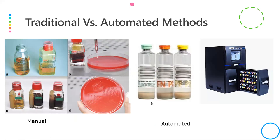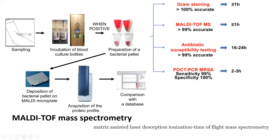Advances beyond classical culture methods include automated systems that detect carbon dioxide produced by bacterial growth using colorimetric or fluoroscopic methods. When the bottle is flagged, a bacterial pellet can be obtained and various identification techniques applied. MALDI-TOF — Matrix Assisted Laser Desorption Ionization Time-of-Flight spectrometry — is an advancement in bacterial identification.